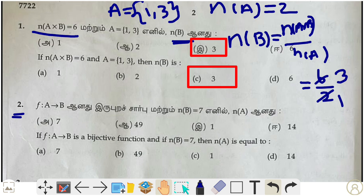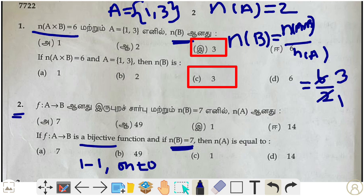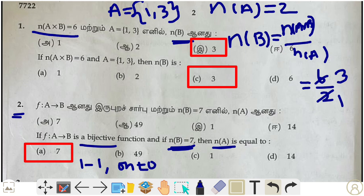Second question: f is a bijection from A to B. Bijection means it is a 1-to-1 and onto function. 1-to-1 means every element has an image, and onto means codomain equals range. Since n(A) = 7, n(B) must also be 7. Only then will you get a 1-to-1 and onto function.